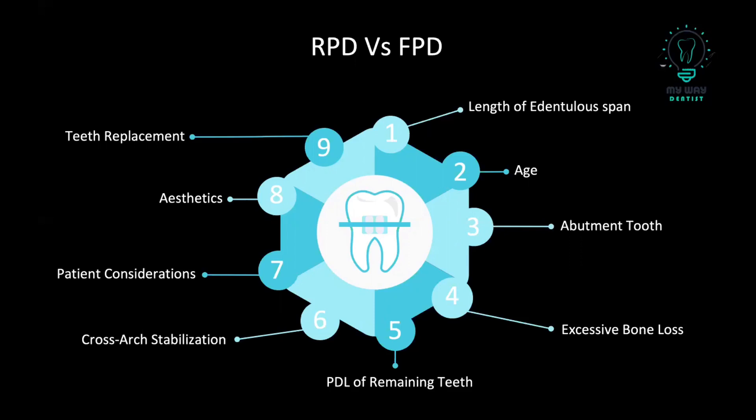Another reason is the abutment teeth needed when you plan to do a fixed partial denture — you need abutment teeth before and after the space. Another reason to consider is excessive bone loss and compromised PDL of the remaining teeth, which affects your choice because the load and forces applied by the FPD cannot be withstood under these conditions.